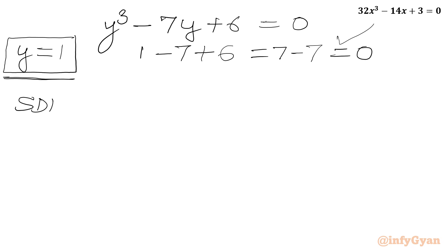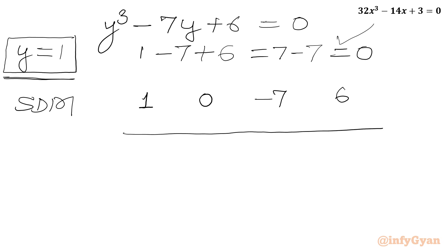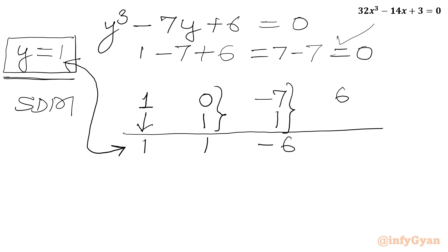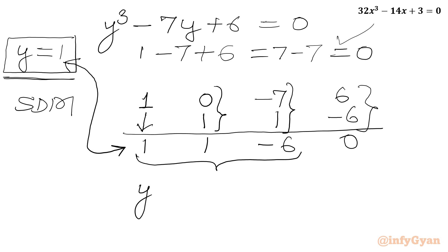Now we can use synthetic division. We write all the coefficients of the cubic equation: coefficient of y³ is 1, coefficient of y² is missing so we write 0, coefficient of y is -7, and the constant is 6. The leading coefficient 1 stays as is. We multiply the base solution 1 by 1 to get 1, add to get 1, then 1 times 1 is 1, and addition gives -6, then 1 times -6 is -6, and addition gives 0. So the coefficients for the quadratic are 1, 1, -6, giving us y² + y - 6 = 0.